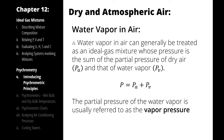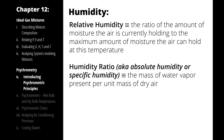Like with other mixtures of ideal gases, it is useful to refer to the relative proportions of the substances that make up the mixture. When we're talking about atmospheric air, that relative proportion is described as humidity, and we describe it in two ways: relative humidity, expressed as a percentage, and humidity ratio, expressed as a proportion of mass to mass.